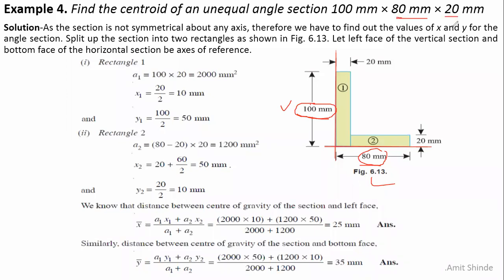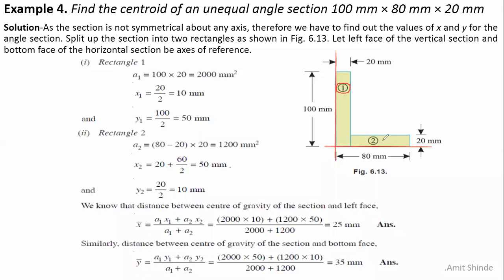The thickness of the angle section is 20 millimeters. We need to find the CG of this section. We divide the angle section into two rectangles. For rectangle number one, the dimensions are 100 by 20 millimeters, giving an area A1 = 2,000 square millimeters. We locate the CG about both the X-X axis and the Y-Y axis.